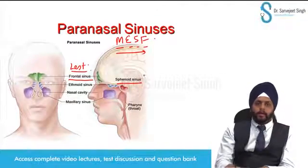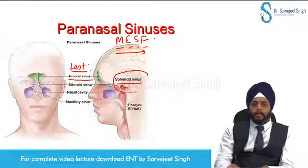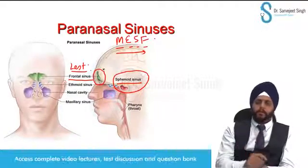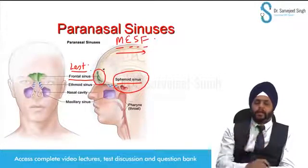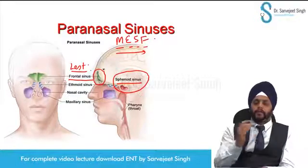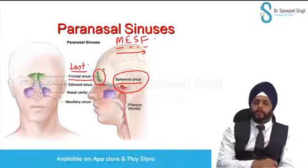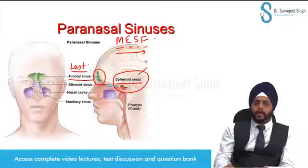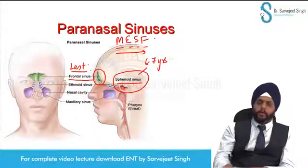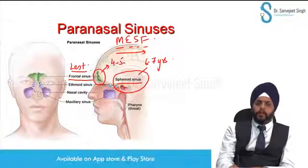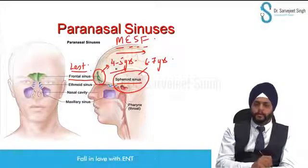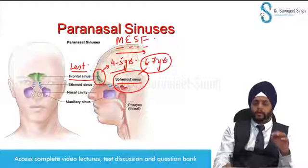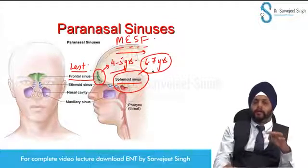Looking at the diagram, the sphenoid sinus is quite deep, whereas the frontal sinus is just below the skin. Therefore, when we do a plain X-ray, the frontal sinus is very quickly visible as it grows, while the sphenoid sinus takes time. The sphenoid sinus is visible only by the age of six to seven years, whereas the frontal sinus becomes visible on a plain X-ray by four to five years of age. The sphenoid sinus is the last to appear on a plain X-ray.